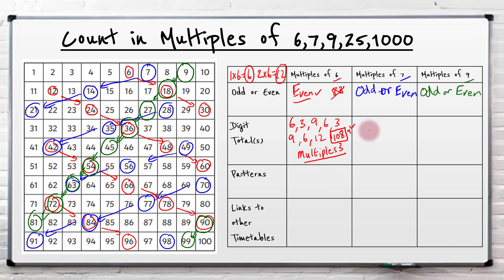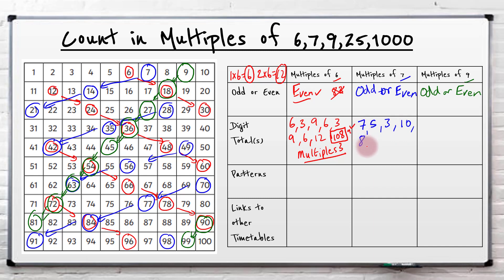So let's look at some of the digit totals for 7. We get 7, 5, 3, 10 - I'm not really seeing anything. They're not multiples and they don't descend or ascend in a certain order. We've got 8 next, 3 plus 5 gives 6 - it's just all random. So there's no real pattern there, which is a bit annoying, but it's useful to find this out.